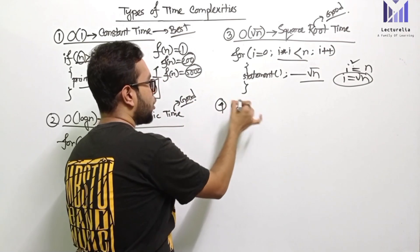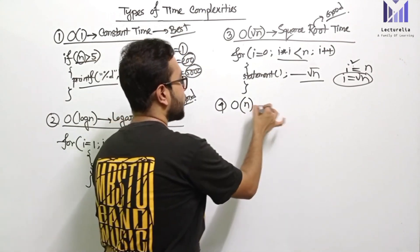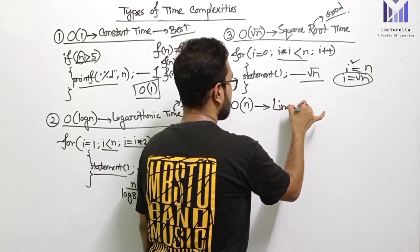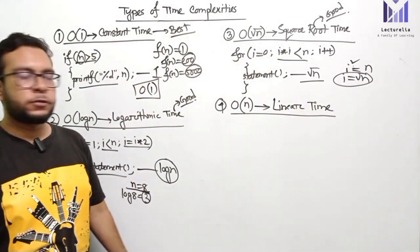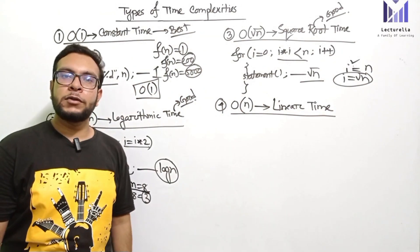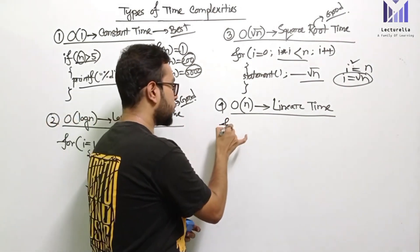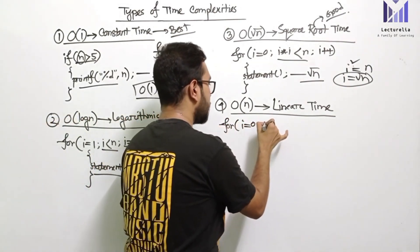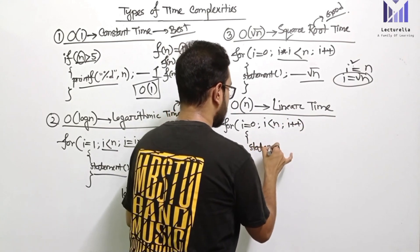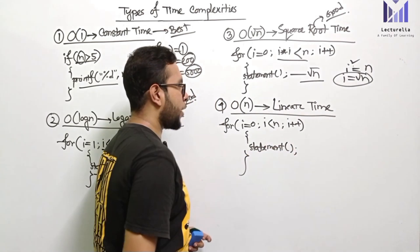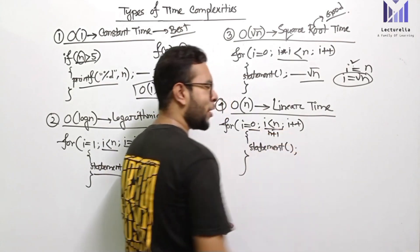The next type is order of n, which is linear time. Just for example: i is equal to 0, i is less than n, i plus plus — we can have a statement inside. This statement executes from 0 to n, and this loop runs n times, giving us linear time complexity.